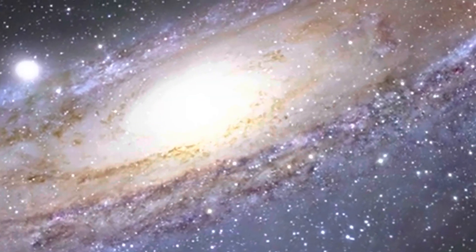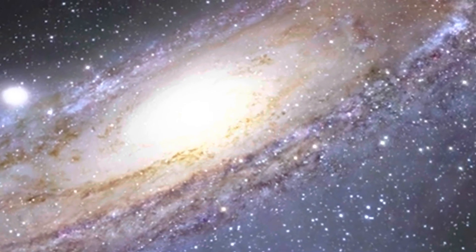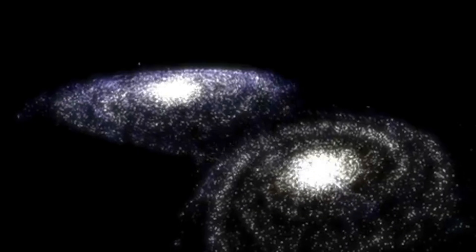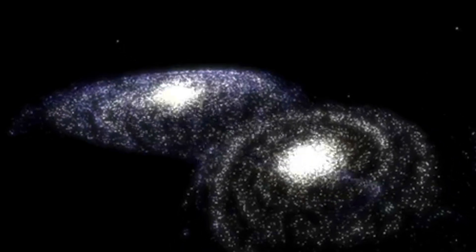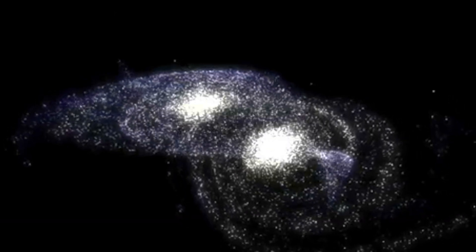And once you zoom out like that, you start noticing some very strange things. Which brings us to the part of the story no one expected. The more we look at Gaia's map, the weirder and more amazing things get. First, we found evidence of collisions. Long ago, the Milky Way smashed into a smaller galaxy called Gaia Enceladus. We now see the remnants of that collision. Entire streams of stars still looping around us, like cosmic scars frozen in time.